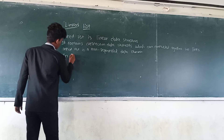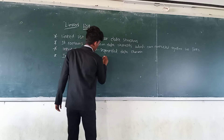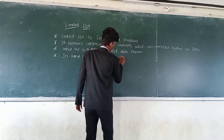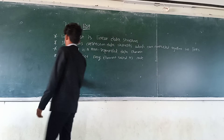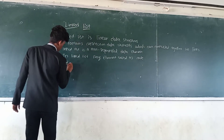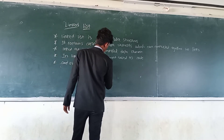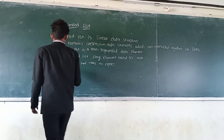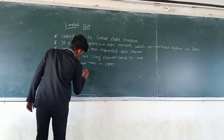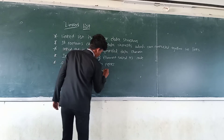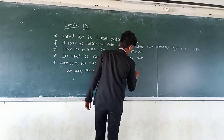In linked list, every element is called a node, and every node has two parts: one part for data, and another part for the link or address.